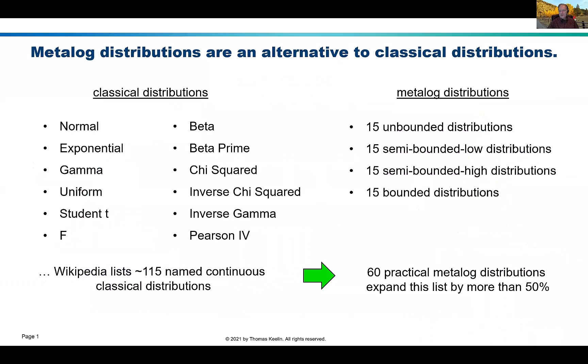Metalog distributions may be considered as an alternative to using the classical distributions. Wikipedia lists about 115 named continuous classical distributions. In contrast, in the metalog family there are about 60 practical metalog distributions that comprise unbounded distributions, semi-bounded low, semi-bounded high, and bounded distributions. This expands the list of practical distributions you may want to consider in your toolkit by more than 50%.